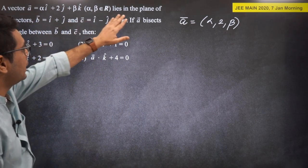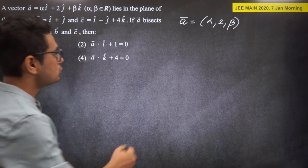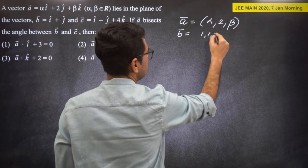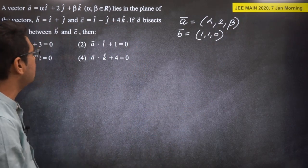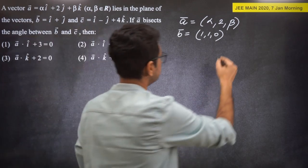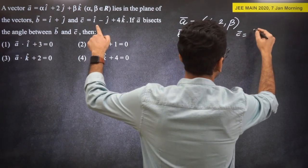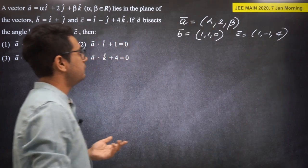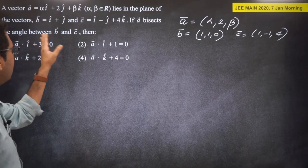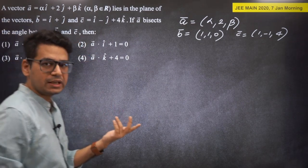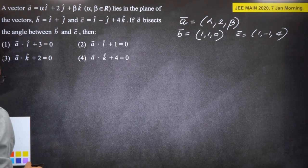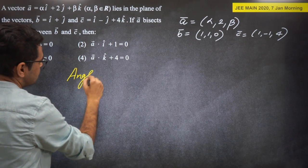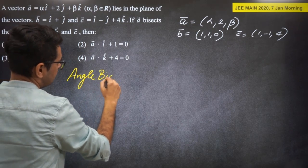So A (alpha, 2, beta) lies in the plane of vector B = (1, 1, 0) and C = (1, -1, 4). And A bisects the angle between B and C. This question belongs to the category of angle bisectors — a very important topic in vector algebra.